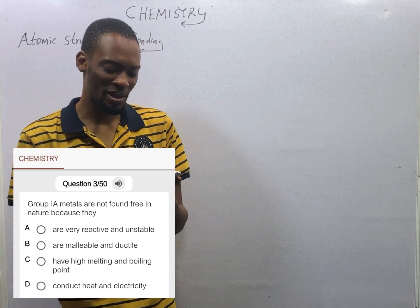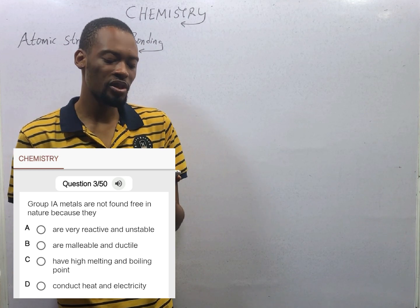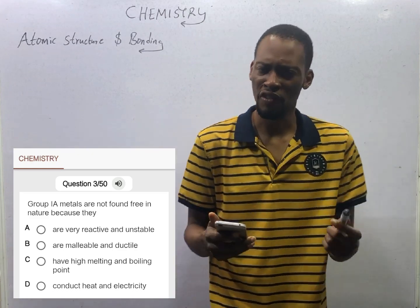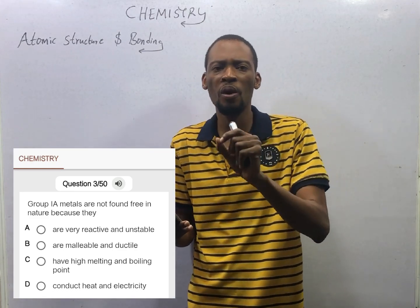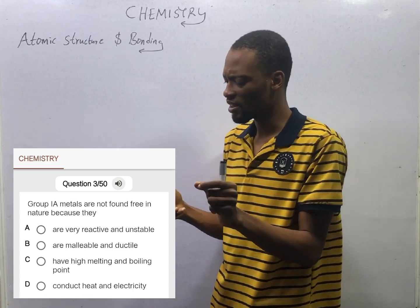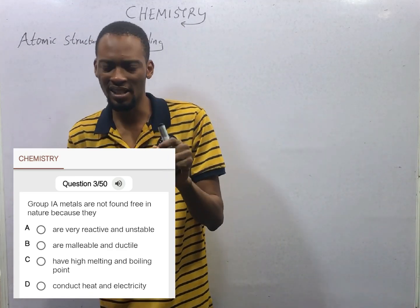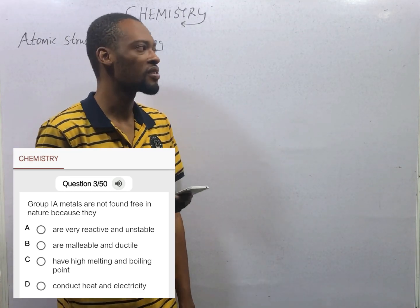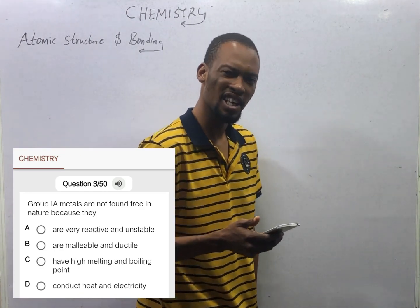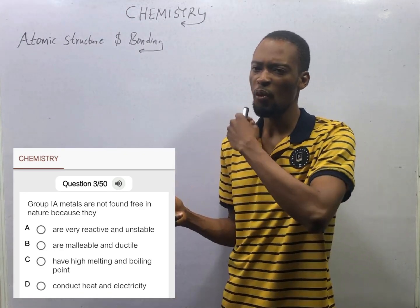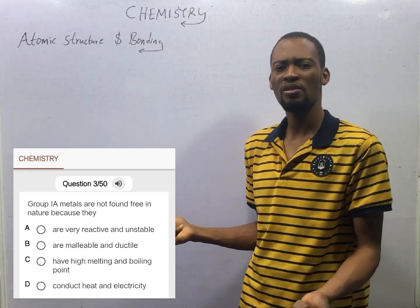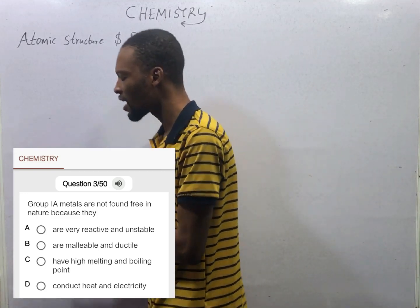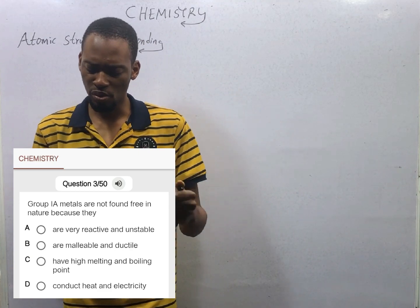Option C: they have high boiling and melting points. Option D: they conduct heat and electricity. Generally, metals are good conductors of heat energy. But out of all these options, the one that makes Group 1A metals not found free in nature is because they are very reactive and unstable. They have one electron in the outermost shell; they can easily give out that electron to become stable. The most reactive metal is francium, and it is in Group 1. This shows you that Group 1 elements are extremely reactive and unstable.